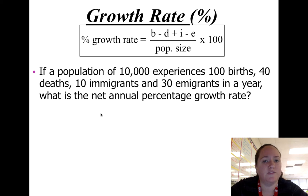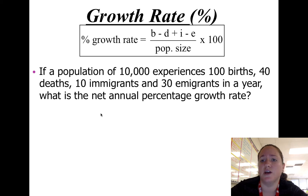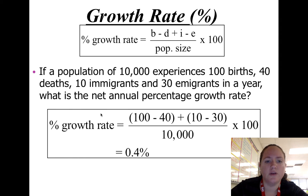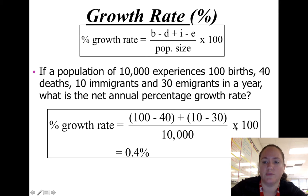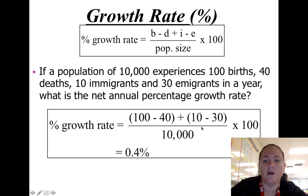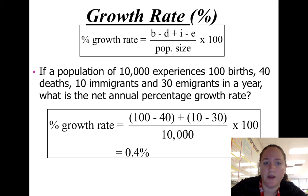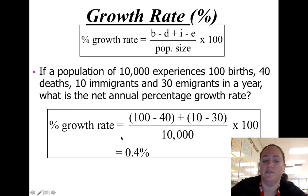Here's an example — pause the video and work it out. If a population of 10,000 experiences 100 births, 40 deaths, 10 immigrants, and 30 emigrants in a year, what is the net annual percentage growth rate? You set it up as: (100 − 40 + 10 − 30) divided by 10,000, multiplied by 100. Note that you cannot use a calculator on the AP exam, so practice doing this math by hand. The growth rate should be 0.4%.